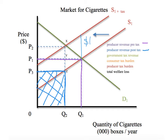This whole box from P2 to Z to P3 — this entire box — represents the total government tax revenue. That is how much money the government will make as a result of this tax.